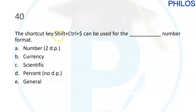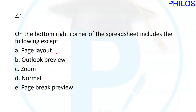Question forty: the shortcut key Shift+Control+Dollar sign ($) can be used for the blank number format. It is used for the currency number format. The correct answer is B: currency number format.